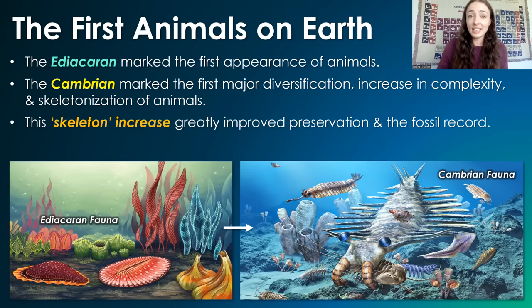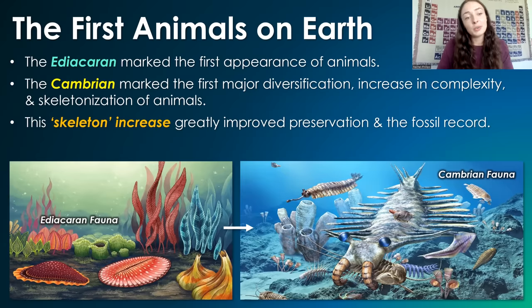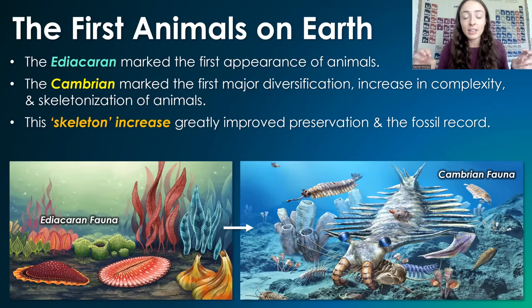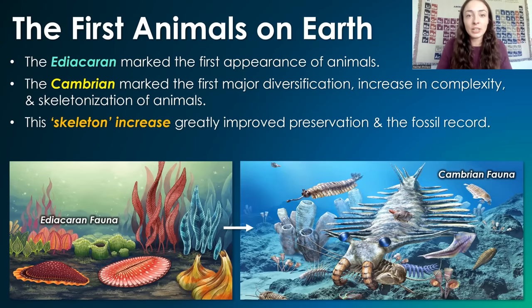This increase in hard parts greatly improved the preservation of such organisms and thus the fossil record, which is why the Cambrian period seems like somewhat of an explosion of life, because the organisms just got preserved a lot more easily. But there were also increases in abundance and diversification as well.